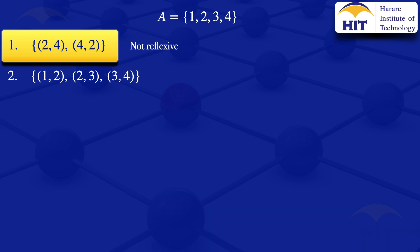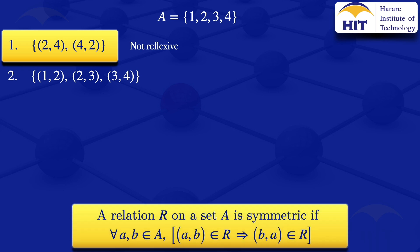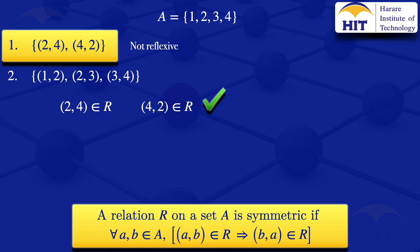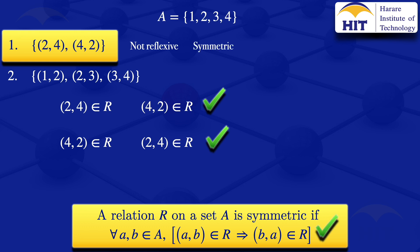Moving on, I'll check if the first relation is symmetric. By definition, a relation on a set A is symmetric if for all a, b in set A, whenever the ordered pair (a,b) is in R, then (b,a) is also in R. The pair (2,4) is in R, and (4,2) is also there. Then checking (4,2) in R, we confirm (2,4) is in R. The condition is satisfied, so the relation is symmetric.